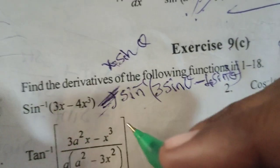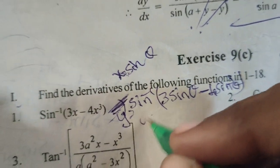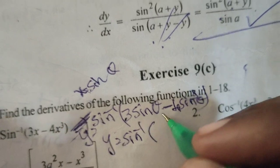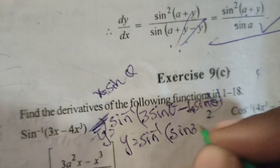Now the given function, consider y. Therefore, y equals sine inverse of 3 sine theta minus 4 sine cube theta, which means the formula sine 3 theta.